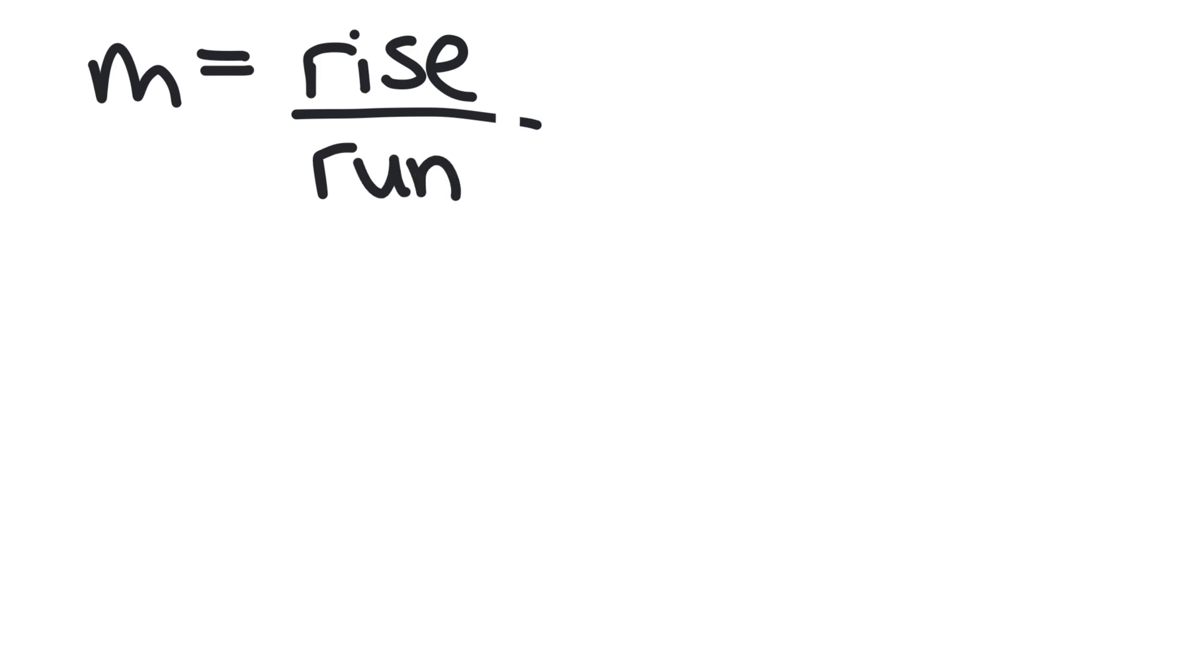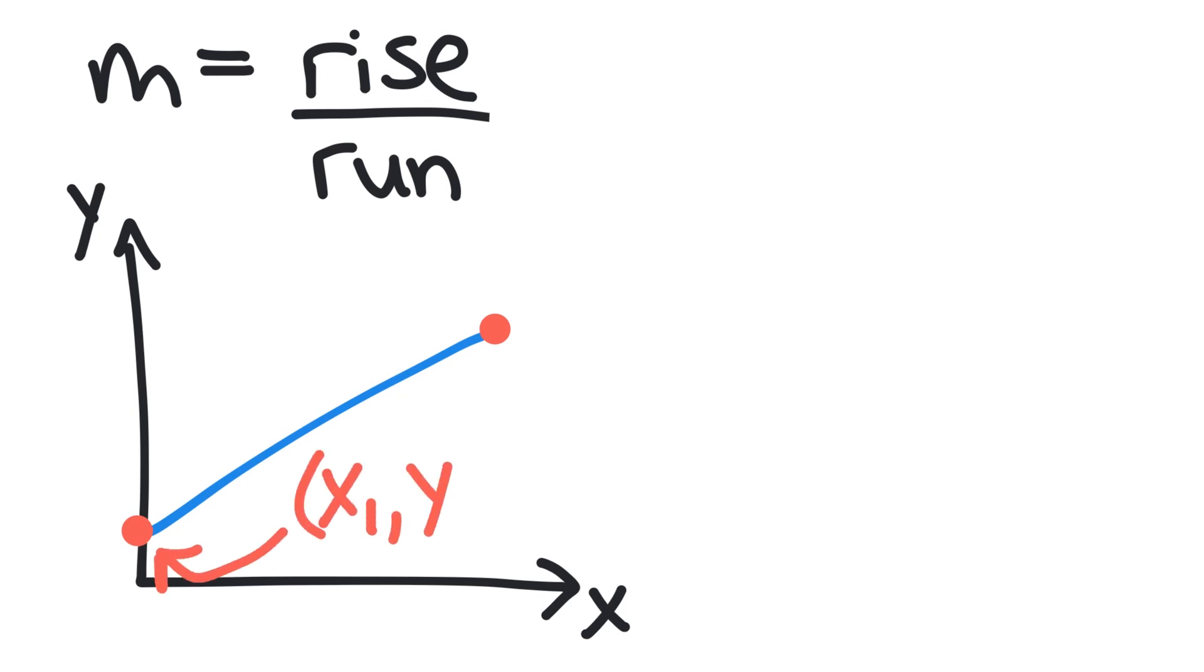We can also do a quick sketch of that by showing our x and y axes. And just draw a straight line and we notice that we have two points and we have two coordinate values